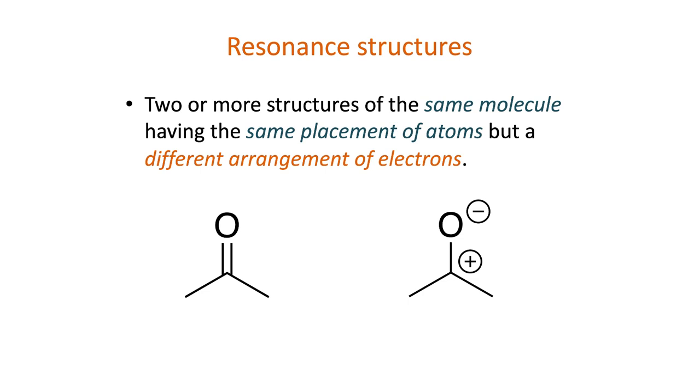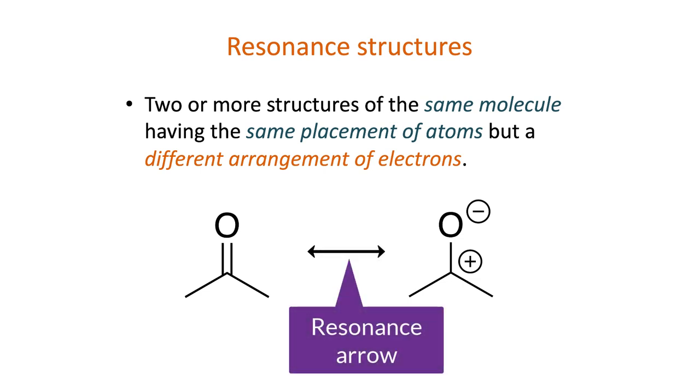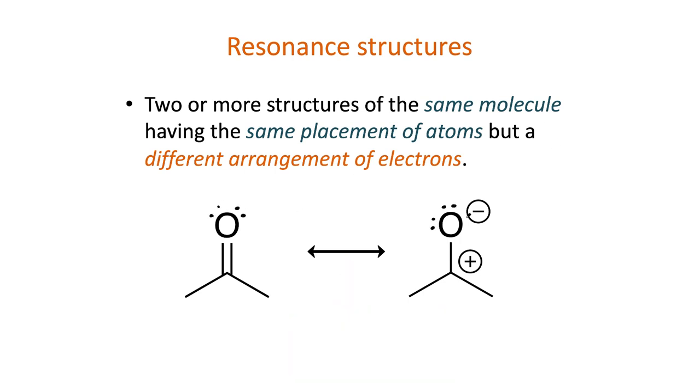The two structures below are resonance structures of each other. To indicate that, I draw a resonance arrow between the two. We can use curved arrows to show the difference in electron arrangement between the two structures. First, draw in all the non-bonding electrons, or lone pairs, and atoms near parts of the structure that have changed. Notice that we start with two non-bonding electron pairs on the left and finish with three on the right. We also have a pi bond on the left that's no longer present on the right. Nothing else in the structure has changed.